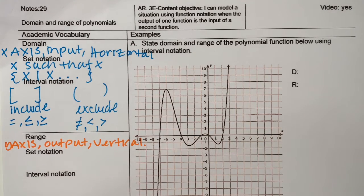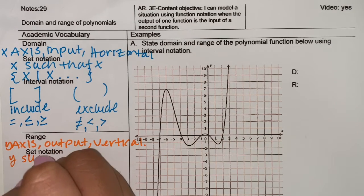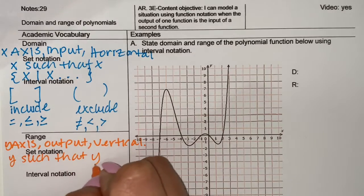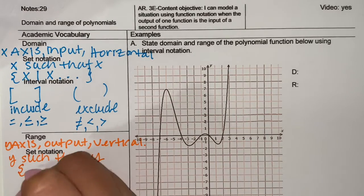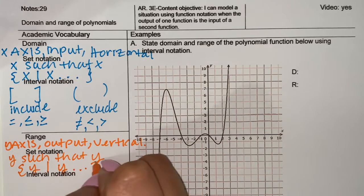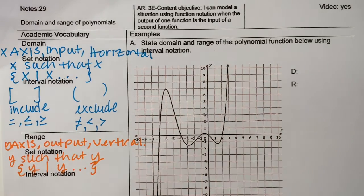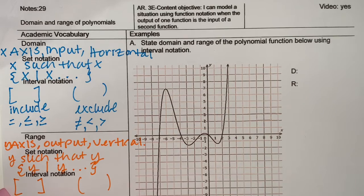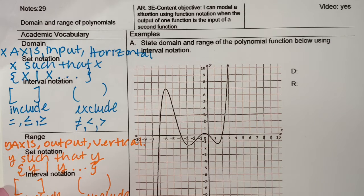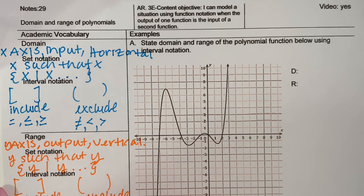Set notation for the range is going to be y such that y. So you're going to get this brace, y, vertical line, such that, and then whatever you come up with. And then interval notation is that same thing — the brackets or parentheses. Remember, include means equal to, greater than or equal to, less than or equal to. Does not equal, less than, or greater than for exclude.